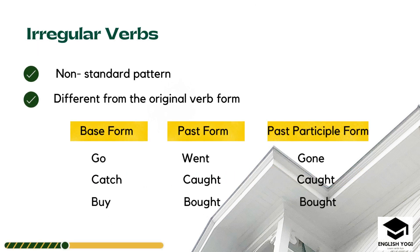On the contrary, there is irregular verb. Irregular verbs follow a non-standard pattern, meaning the past form and past participle form of the base form are completely different from the original verb. For example, the base form 'go' becomes 'went' in the past — which is irregular and does not follow a standard format — and 'gone' is the past participle. So irregular verbs do not have the standard pattern like regular verbs.